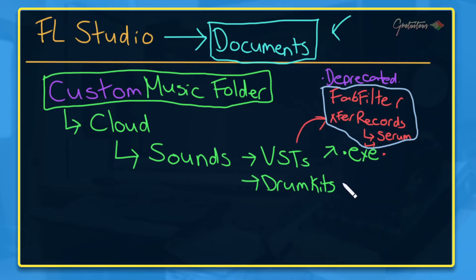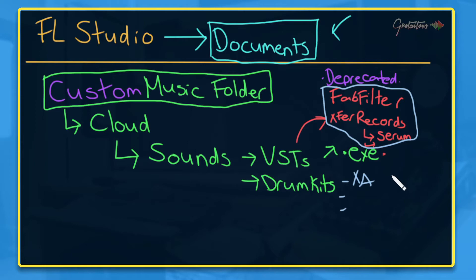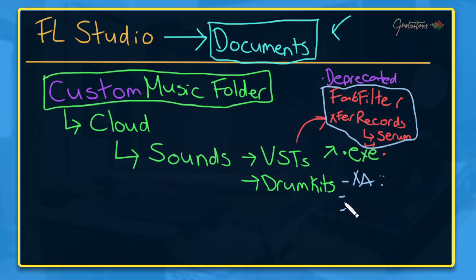For drum kits — these are your one-shot drum samples — I organize them by vendor. For example, Exclusive Audio gets its own folder, and any drum kits I have go in there. This is the simplest and easiest approach. A lot of people like using file managers that organize sounds by category like low kick drum or short-tailed kick drum, but that takes way too much time. Just keep it simple by vendor, and over time you'll learn exactly where your sounds are.